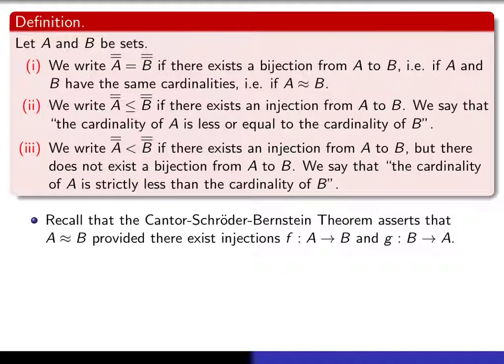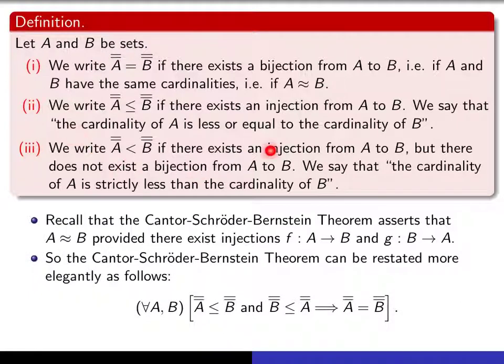Now recall that the Cantor-Schröder-Bernstein theorem asserts that when there exist injections, one injection from A into B and then some other injection from B into A, then the theorem asserts that A and B have the same cardinality. So using the notation that I've introduced, the Cantor-Schröder-Bernstein theorem can be stated in this rather elegant way: for any pair of sets A and B, if the cardinality of A is less than or equal to the cardinality of B, and the cardinality of B is less than or equal to the cardinality of A, then the two cardinalities are equal.